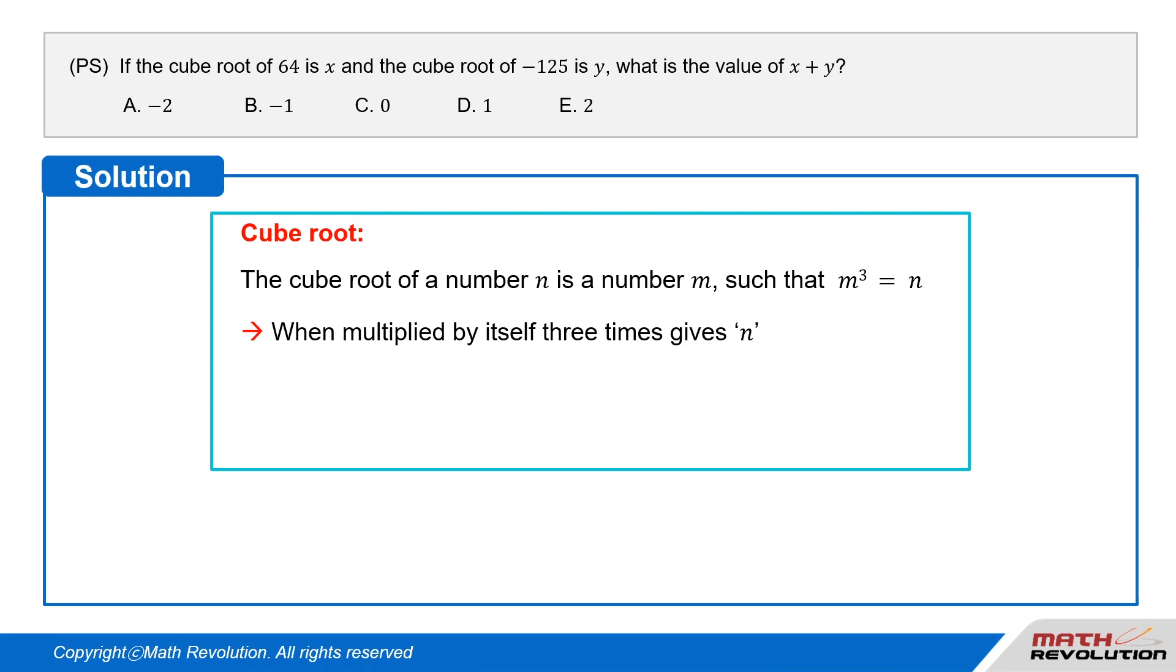That is, the cube root of a number n is the number m which when multiplied by itself three times gives n.